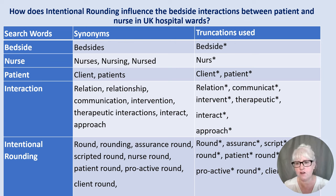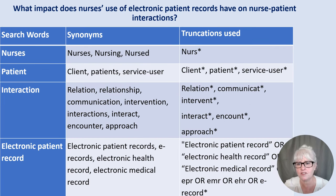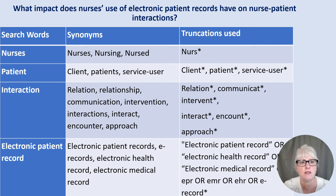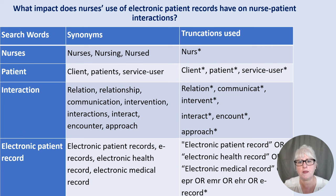I've also got an example from my PhD question: 'What impact does nurses' use of electronic patient records have on nurse-patient interaction?' The keywords are nurses, patient, interaction, and electronic patient record. Note the quotation marks around 'electronic patient record' — you can keep phrases together in a search, which links to the use of boolean operators. You can get your synonyms and truncations ready and then ask a librarian if you've missed anything.